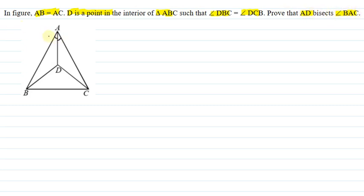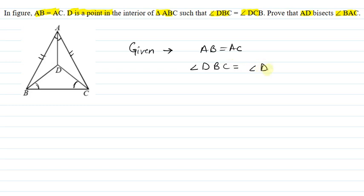Now, I have given that AB is equal to AC. Similarly, angle DBC is equal to angle DCB. I have to prove that AD divides angle A into two equal parts.